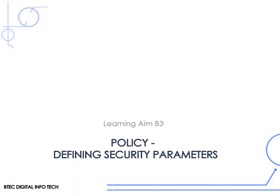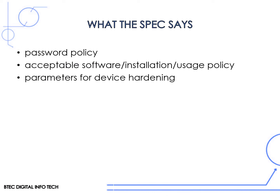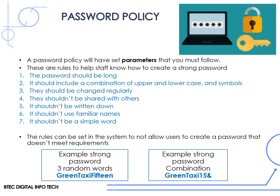This is Learning Aim B3 Policy, and this video is focusing on defining security parameters. The specification says that we need to include password policy, acceptable software installation and usage policy, and parameters for device hardening. A password policy will have set parameters that you must follow. A parameter is a variable or a list of operations that you need to include in your policy.